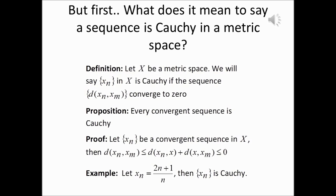Taking the limit as n and m go to infinity, the distance between the n-th term and x goes to zero, and the distance between x and the m-th term also goes to zero. Therefore the ordinary distance between the n-th term and the m-th term is less than or equal to zero. Since distance is non-negative, the limit equals zero.